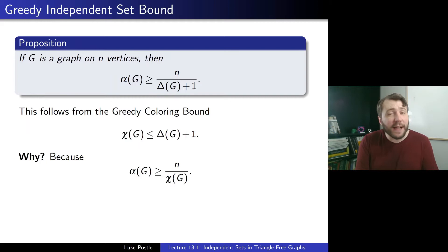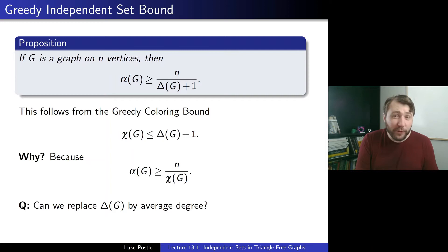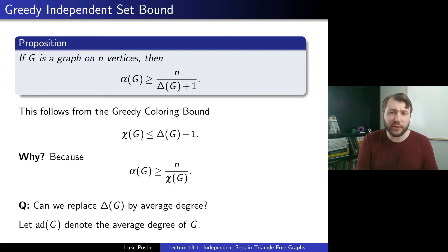A good question is: can we replace delta(G) above by average degree? This is a really nice question — why do we need the maximum degree there? As a notation note, I'll let ad(G) denote the average degree of G, which is the average of the degrees of the vertices of G.